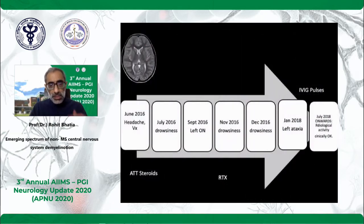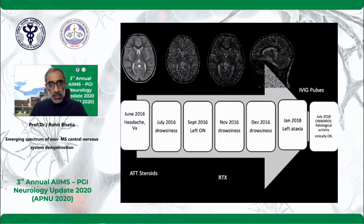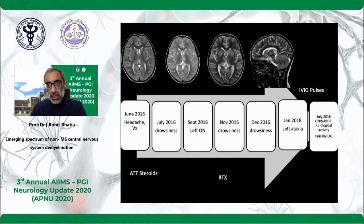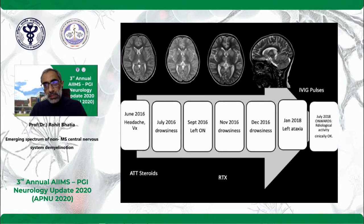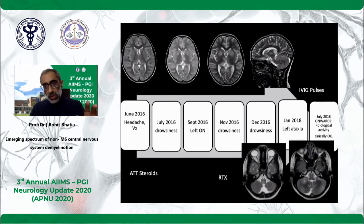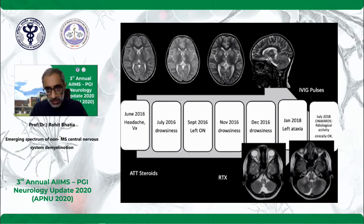Let's go to a second case: a young girl about 10 years old with a long story of headache, drowsiness, optic neuritis, then ataxia, and so on. She initially gets a diagnosis of meningitis, then someone thinks about an immune-mediated disease, and she is found to have gray and white matter involvement along with optic neuritis. She is treated with steroids, then put on rituximab and IVIG pulses later. This diagnosis was revised to MOG spectrum disease — a child presenting with brainstem features, diencephalic features, and meningitis-like illness.